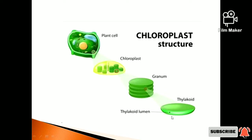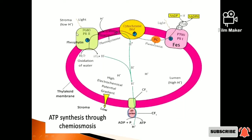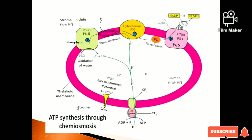This is not the whole chloroplast — this is a single thylakoid membrane. Inside this gap is the lumen, and this outer region is the stroma. There are many complexes inside this thylakoid membrane.